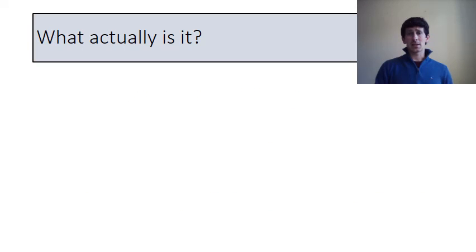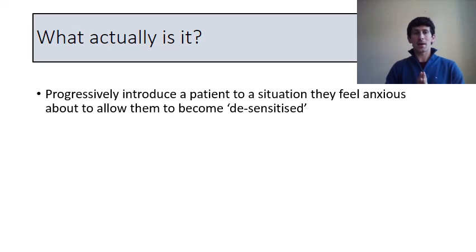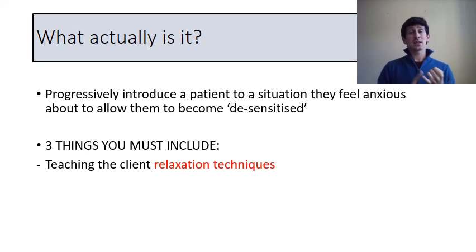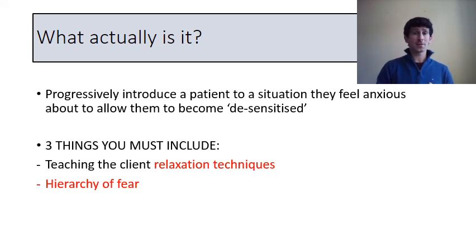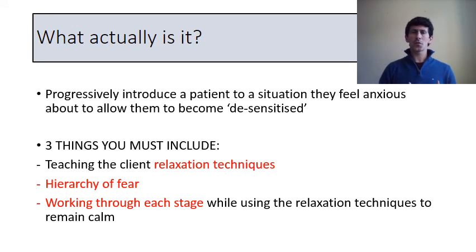So what actually is systematic desensitization? It's about progressively introducing a patient to a situation they feel anxious about and desensitizing them to their phobia. There are three things you've got to include in any answer about systematic desensitization: teaching relaxation techniques, creating a hierarchy of fear, and then working through each stage of that hierarchy while using the relaxation techniques to remain calm.